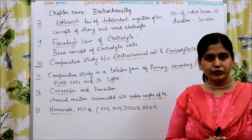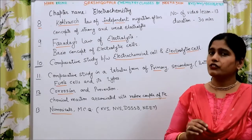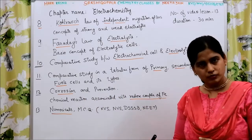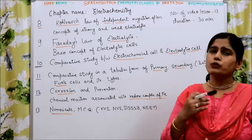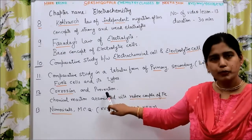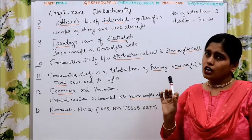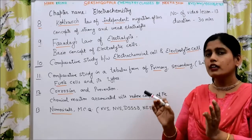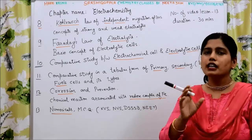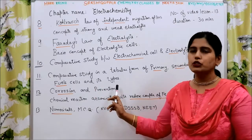Moving to number 12, we will deal with corrosion and its prevention — the harmful effects of corrosion and how we can overcome them. This is categorized under the sub-topic prevention of corrosion. The chemical reaction associated with corrosion is linked to the redox couple of iron. Wherever corrosion occurs, a redox couple is generated, and the chemical reactions taking place will be covered in module number 12.